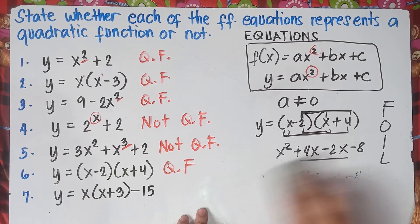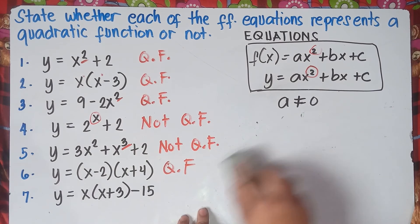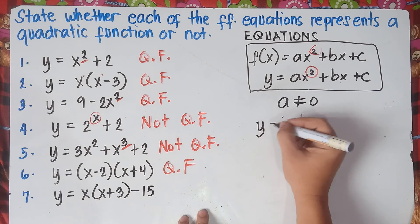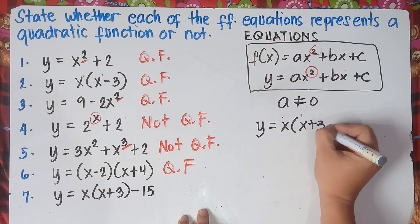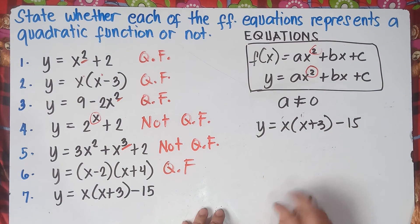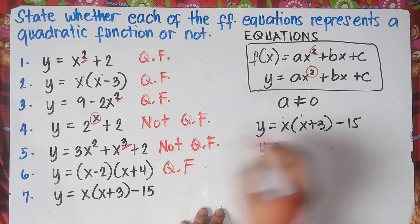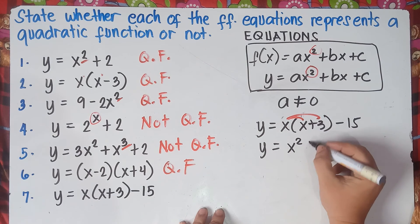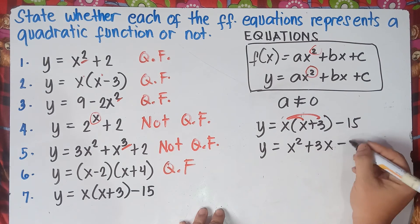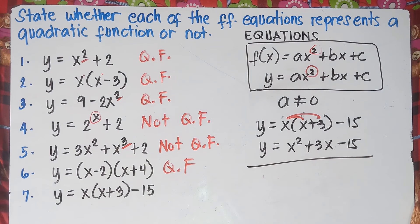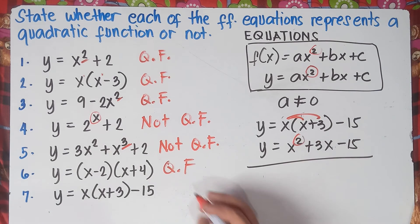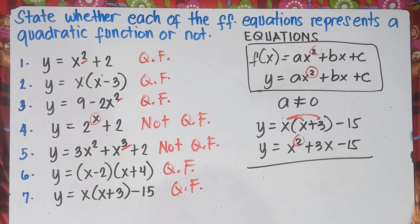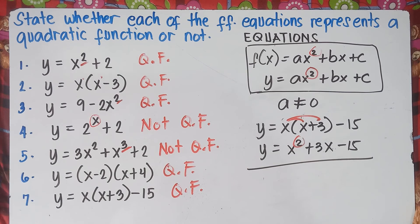Number 7: we need to simplify using the distributive property. x times x = x², x times 3 = 3x, copy −15. So y = x² + 3x − 15. The highest exponent is 2, therefore this is a quadratic function. That's how you determine if it's a quadratic function or not by means of equations.